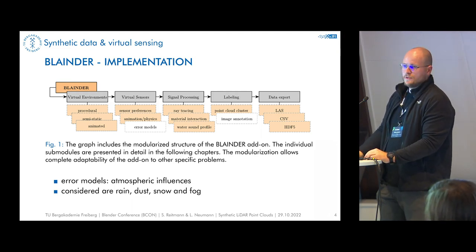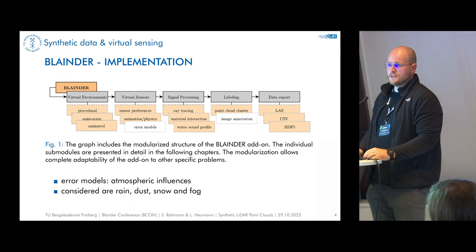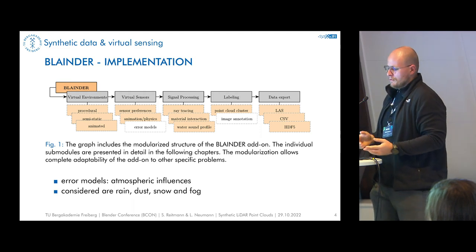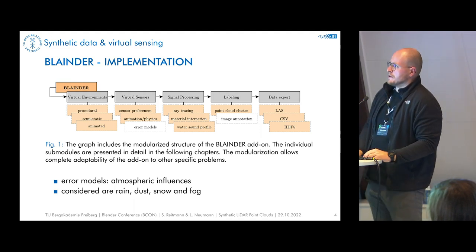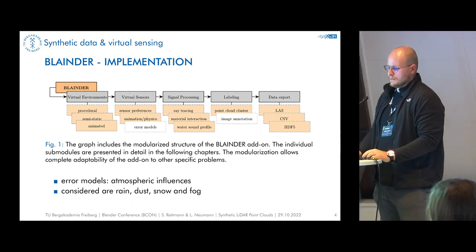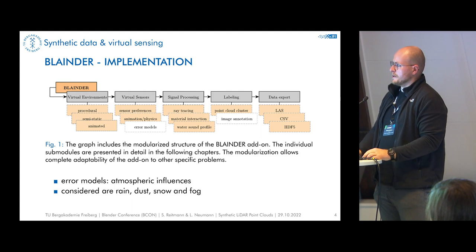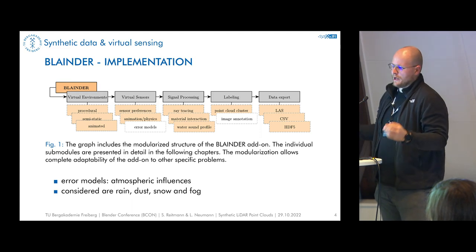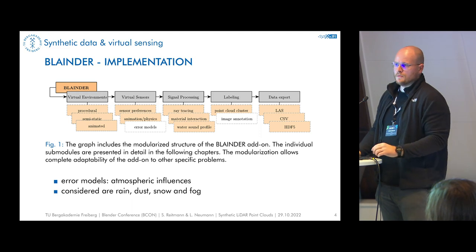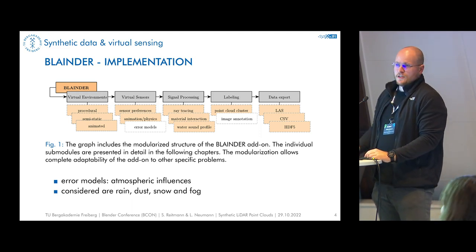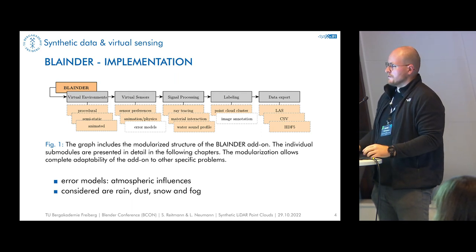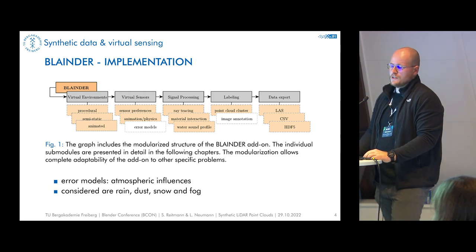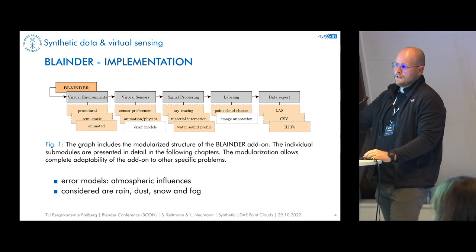Several modules are implemented for BlendLiDAR. First, virtual environments: we need a 3D representation of everything we want to measure virtually. This can be done procedurally, for example for landscapes, or we can use a semi-static representation — altering models using publicly available repositories like ShapeNet, which has many different 3D objects. This is useful for example for aircraft detection. We can also implement animations. For sensors, we have predefined famous lidar sensors like Velodyne, UltraPuck, or AlphaPuck, but you can also define your own sensor by setting up a YAML file and loading it into the add-on.